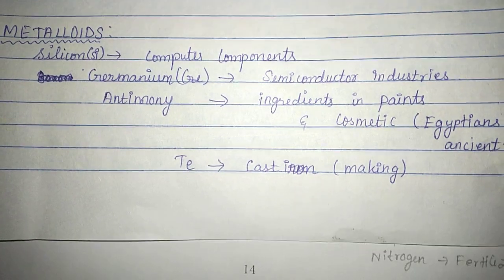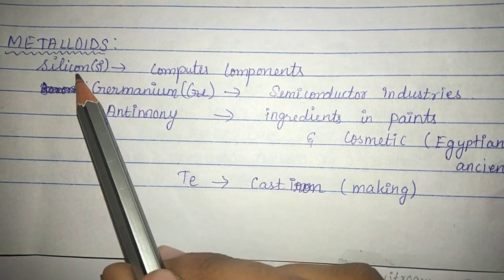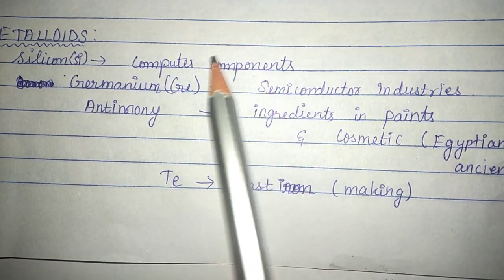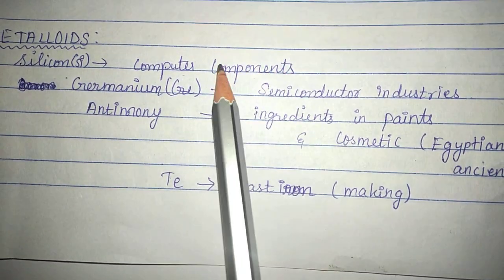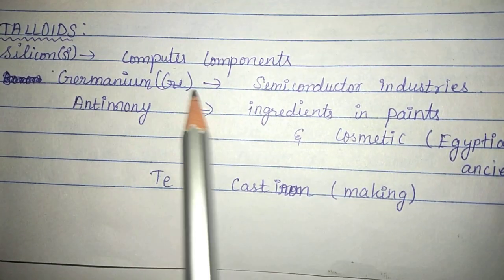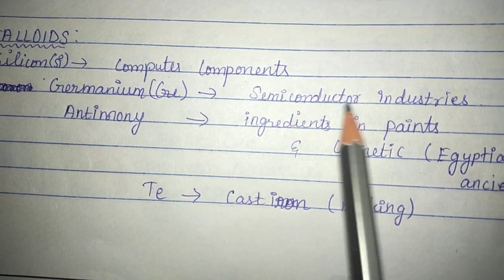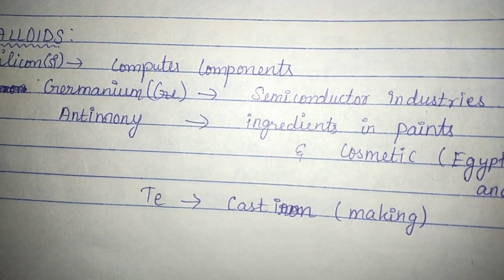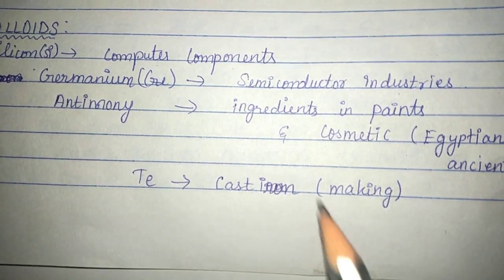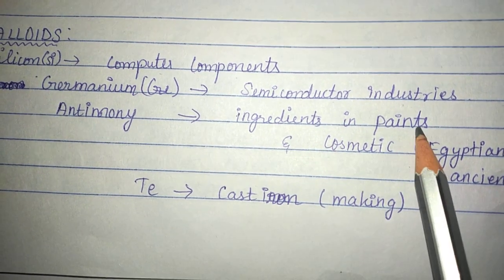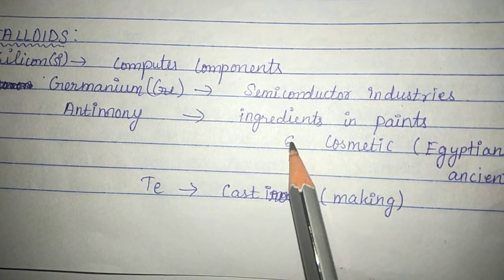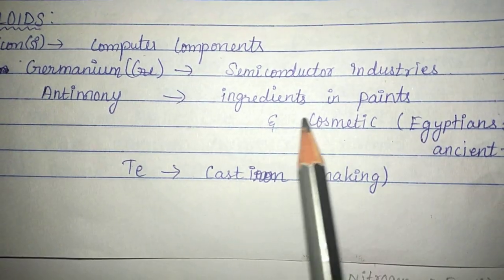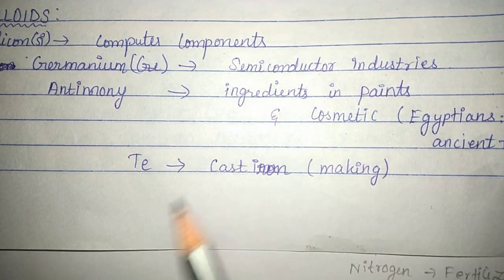Now for metalloids: silicon is found in computer components — specifically computer chips. Germanium is used in semiconductor industries. Antimony was used as a painted ingredient and in cosmetics — it was used by ancient Egyptians.